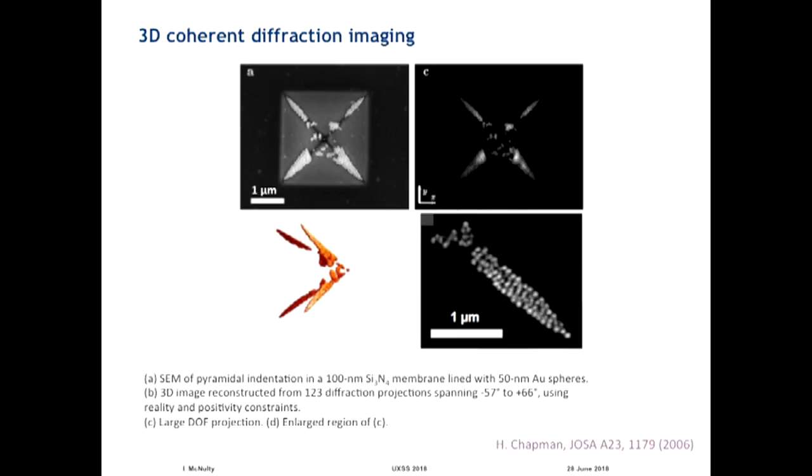So this was demonstrated actually quite a while ago by Henry Chapman and collaborators, some dozen years. They took a simple test object which consisted of this pyramid on a silicon nitride membrane. Silicon nitride is relatively transparent to even soft X-rays. It's maybe 50 or 70 nanometers thick in this case. And it was decorated, or I should say the edges and the corner of this pyramid were decorated with 50 nanometer gold balls, gold spheres. So the idea is that they took this guy and made a coherent diffraction pattern for many orientations of this object and rotated it through as much of 180 degrees as they could. 123 projections covering this angular range, 57 minus 57 is 66 degrees.